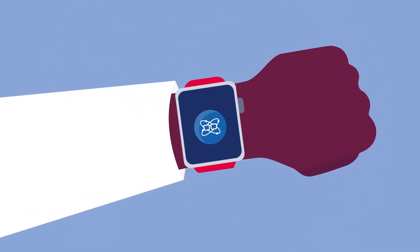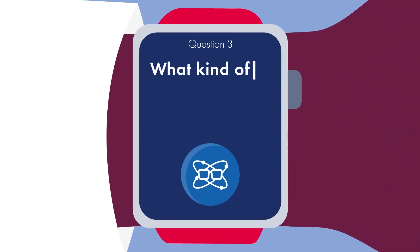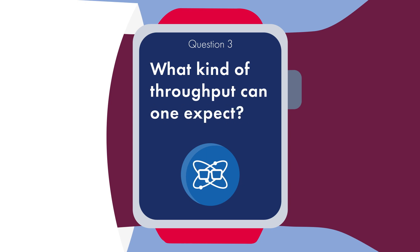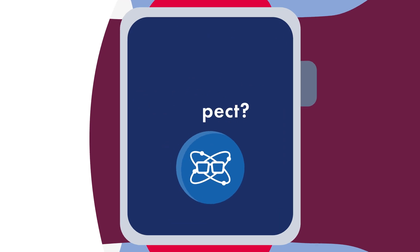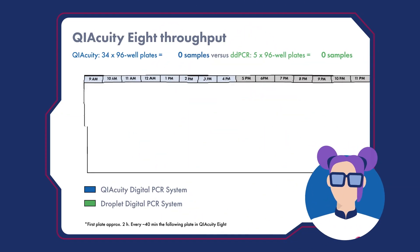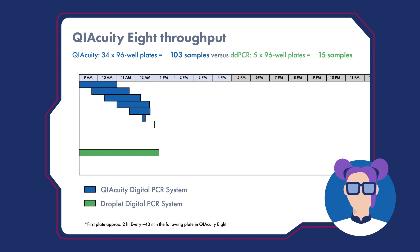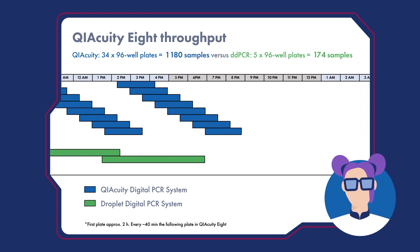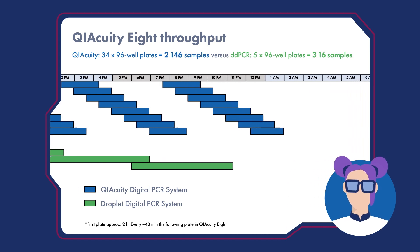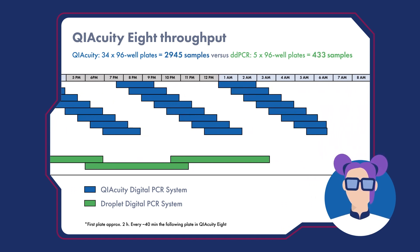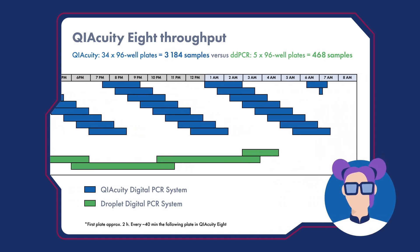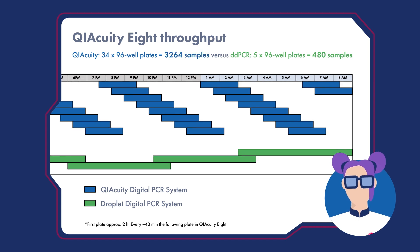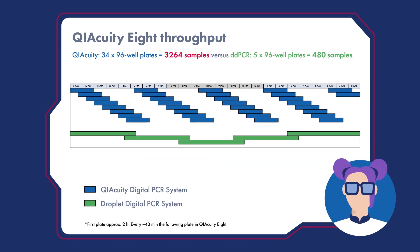And I figured you had one more question. Question 3: What kind of throughput can one expect? The Kaikuity dPCR platforms offer high scalability and you can process up to 3,264 samples per 24-hour shift with the Kaikuity 8 instrument. It offers a qPCR-like workflow with full walk-away automation.